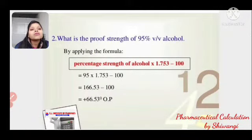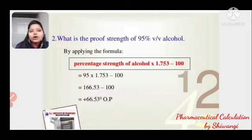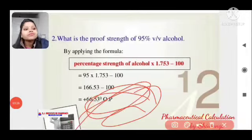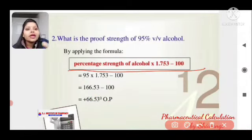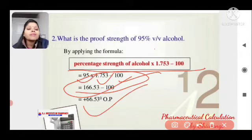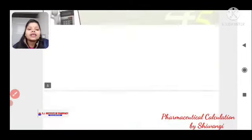What is the proof strength of 95% v/v alcohol? Applying the formula: percentage strength of alcohol × 1.753 − 100. So 95 × 1.753 − 100, which gives a positive result — confirming it is over proof.